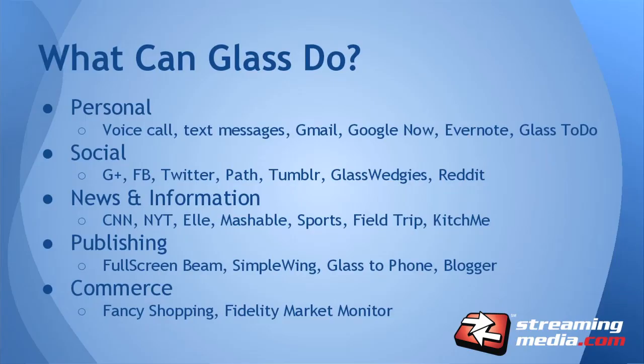What can Glass do? It handles personal stuff, social stuff, news and information, publishing, and commerce. Here are the apps that actually work well. I'll show you the Glassware list — the official one. New apps today include a golf app by SkyDroid, Spalista, a cycling app, a running app, and a Word Lens app. People are making apps and Google is putting them in the app store at a very rapid rate.